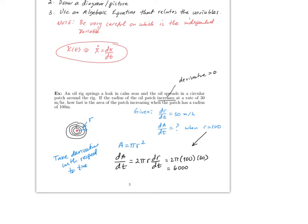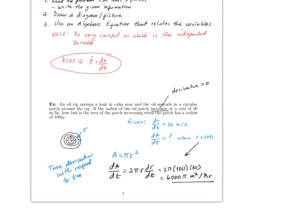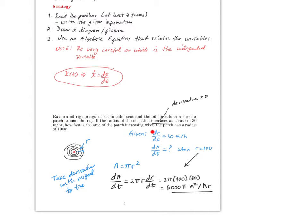Once you multiply everything, dA/dt = 6000π meters squared per hour. That's the rate at which the area is increasing — by 6000π square meters every hour. To recap: read the problem, get the given information, draw a picture if needed, find an equation relating the variables (here, the area formula A = πr²), take the derivative with respect to time using implicit differentiation, and plug in.